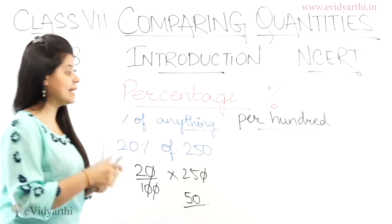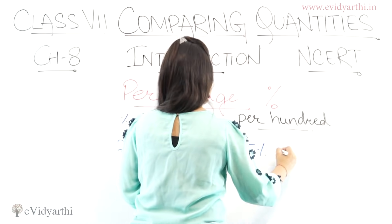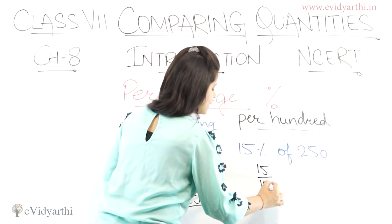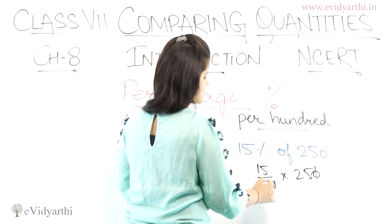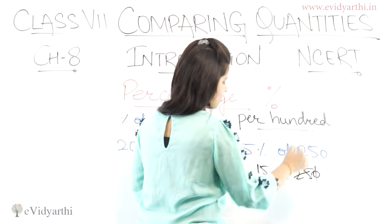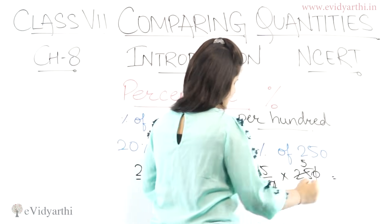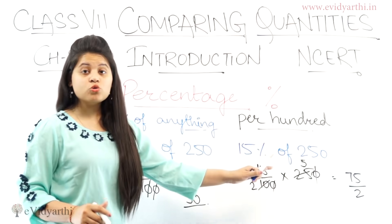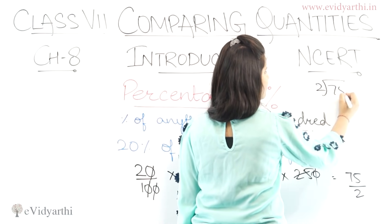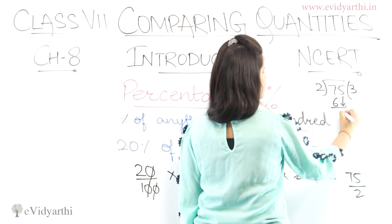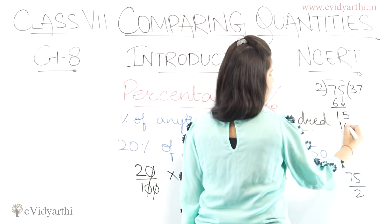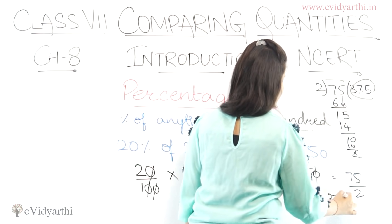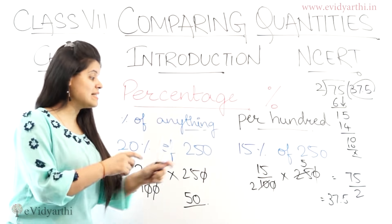But if given: find 15% of 250 — same method. 15/100 × 250. Cancel one zero: 15/10 × 25. Cancel 5: 15 × 5 / 2 = 75/2. Dividing: 75 ÷ 2 = 37.5. So 15% of 250 is 37.5.